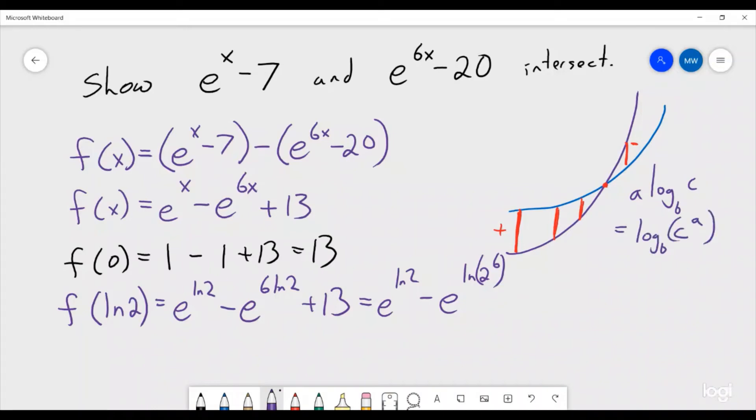That's a logarithm rule. So that's how we were able to go from 6 ln 2 to ln of 2 to the 6th. And we have a plus 13. So e^(ln 2), that's 2, minus 2^6 plus 13.